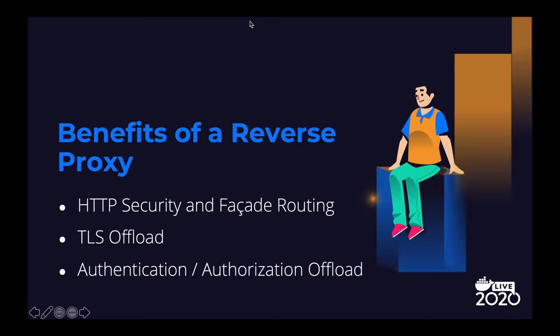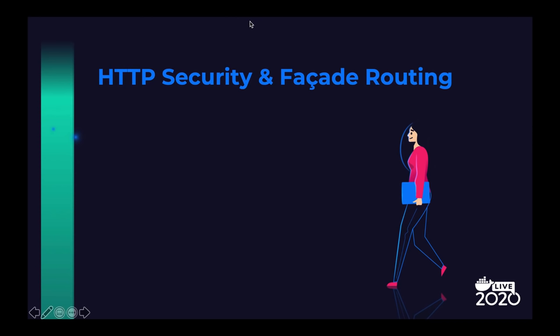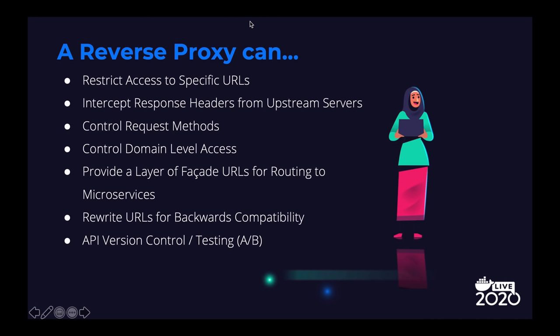So, what are the benefits of reverse proxy? There are a lot of things a reverse proxy can help with, but I want to focus on three main things: HTTP security and facade routing, being able to offload your TLS connections, and how you can offload authentication and authorization. HTTP security is definitely one of the most important things when building an application. A reverse proxy can help with restricting access to specific URLs that you don't want accessible to certain users or areas of your application.